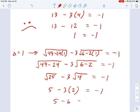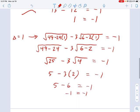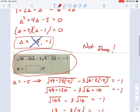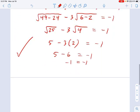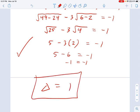Which is 5 minus 6 equals negative 1. And that works. Hooray! So that means we have one solution. Delta equals 1 is our single solution to this equation.